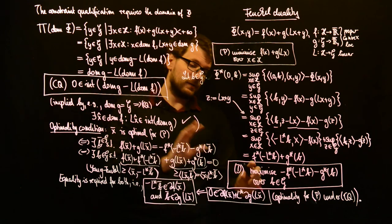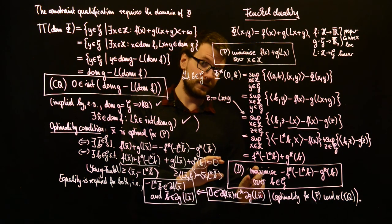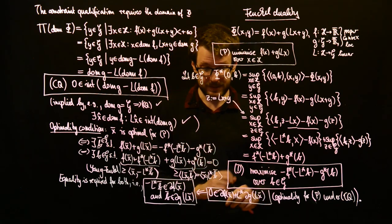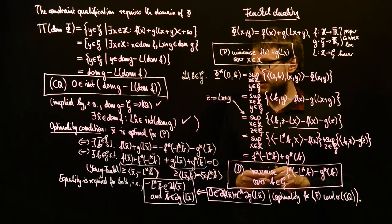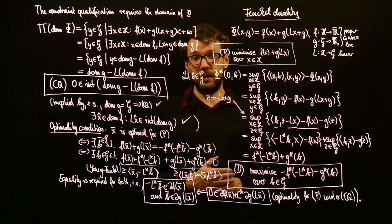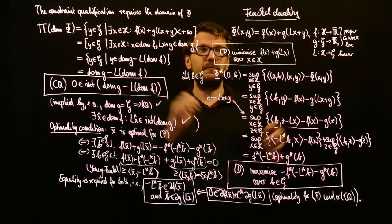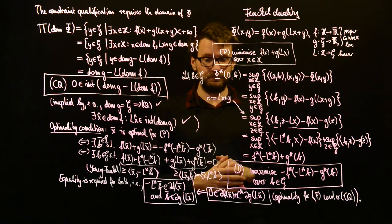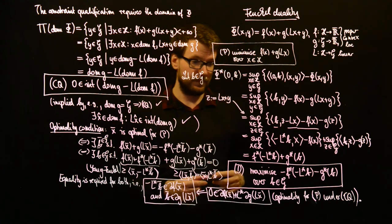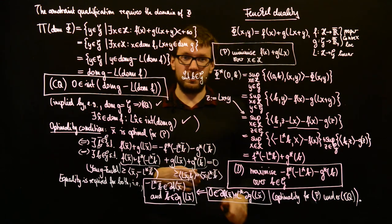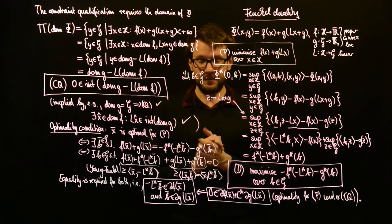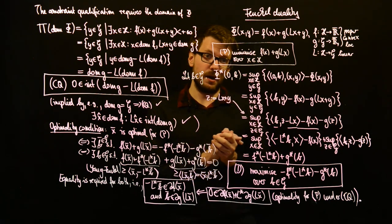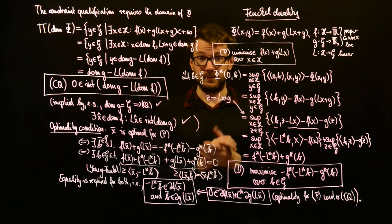What we have shown is that for Fenchel duality, under the constraint qualification, the expected optimality condition holds: 0 is in ∂f(x-bar) + L*∂g(L·x-bar). Without the CQ this is sufficient but not necessary. This is essentially a calculation of all the objects from general duality for this special case of Fenchel duality. In the next video, we will do the same for Lagrange duality, where we will recover Lagrange multipliers and the Slater condition.